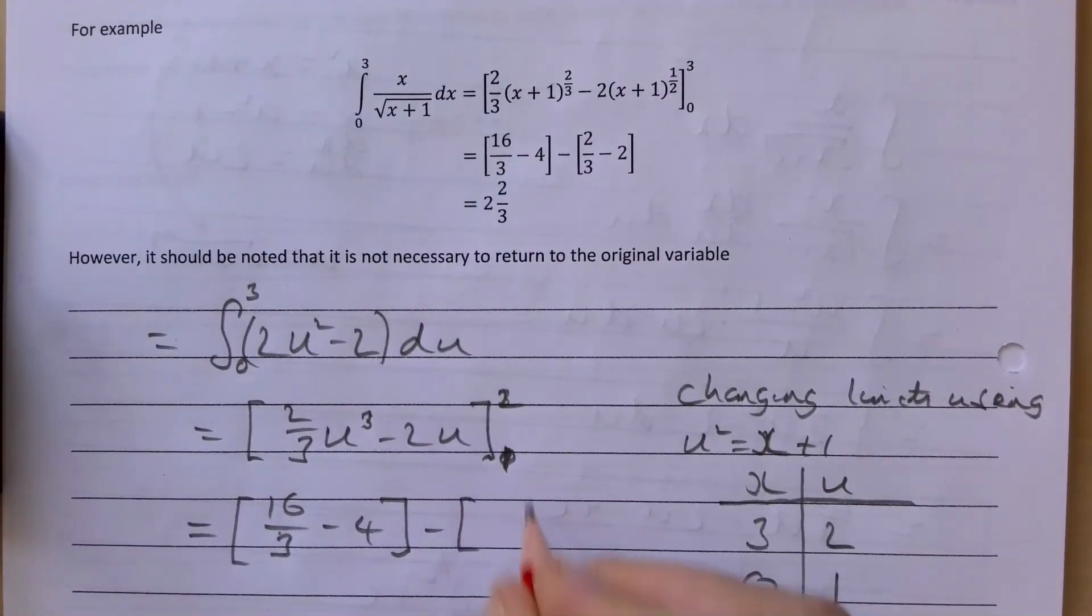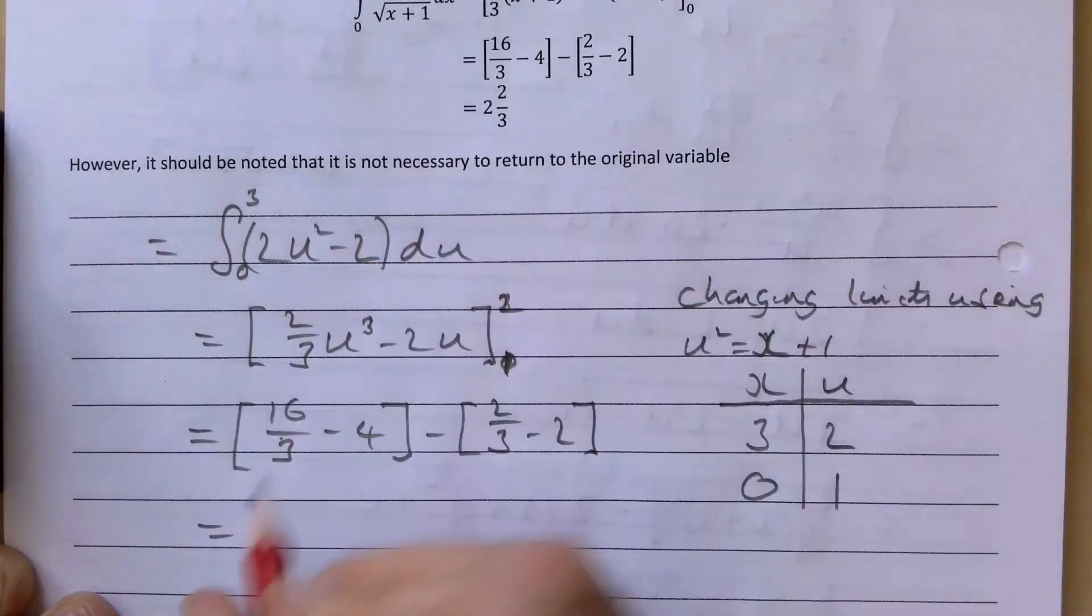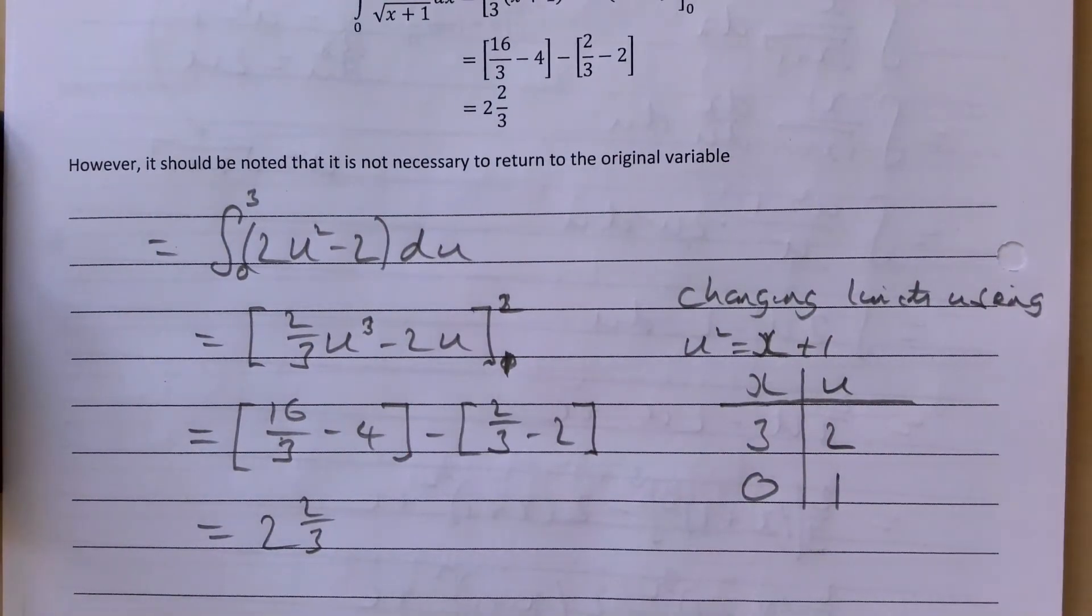And then subtract, put a 1 in there. You get 2 thirds take away 2. And then of course if you tidy that up, you just get what we got up here which is going to be 2 and 2 thirds.